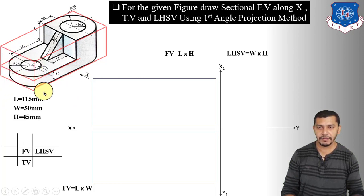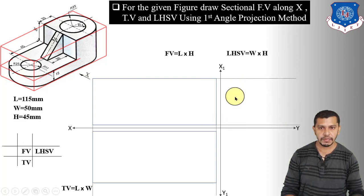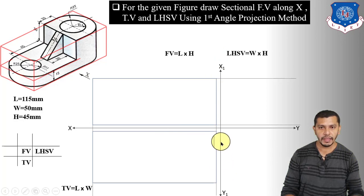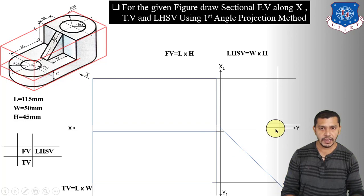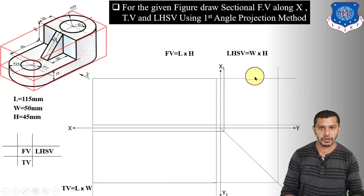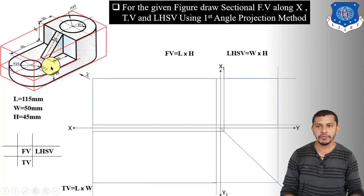Now we have to draw the left-hand side view of the cuboid — it will be a rectangle with length 50 mm and height 45 mm. First, project the height from the front view; this height will be 45 mm. To project the width from the top view, draw a line inclined at 45 degrees to the XY and X1-Y1 line from their intersection point. Project the width onto this line, then take the projection vertically upwards to get the intersection, and draw the rectangle — this will be the left-hand side view of the cuboid having width 50 mm and height 45 mm.